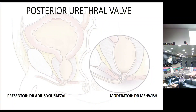Good morning. Today's topic is posterior urethral valve. Posterior urethral valve is a membranous structure in the posterior urethra that persists during development and obstructs the outflow of urine after the child is born. It persists basically in male children, causing outflow obstruction — a developmental disorder.